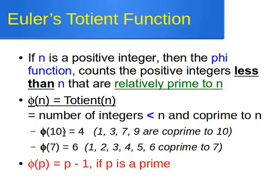For example, phi of 10 is 4 because 1, 3, 7, and 9 are co-prime to 10. So in this definition we do not include the number itself — it's strictly less than 10, so 10 is not included.